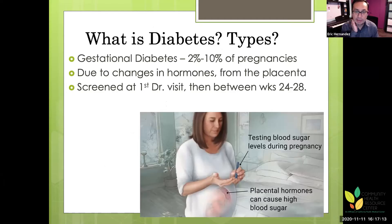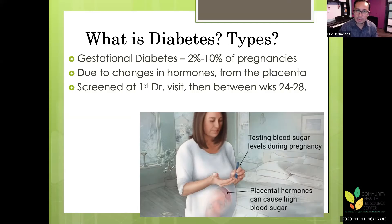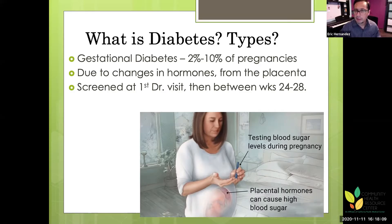Another type is gestational diabetes, affecting 2% to 10% of pregnancies. During pregnancy, the placenta releases hormones that force the body to need more insulin. If due to genetics a woman can't produce that high level of insulin, the result is high blood sugar during pregnancy. Screening checks both whether the woman had diabetes before pregnancy and whether the pregnancy itself caused it — it typically doesn't develop until later, around weeks 24 to 28.